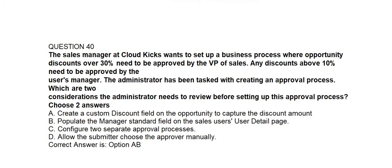Question number forty. The sales manager at Cloud Kicks wants to set up a business process where opportunity discounts over 30% need to be approved by the VP of Sales, and any discounts above 10% need to be approved by the user's manager. The administrator has been asked to create an approval process. Which two considerations should the administrator review before setting up the approval process? Option A: Create a custom discount field on the opportunity to capture the discount amount. Option B: Populate the manager's standard field on the sales user's user detail page. Option C: Configure two separate approval processes. Option D: Allow the submitter to choose the approval manually. Correct answer is Option A and Option B.